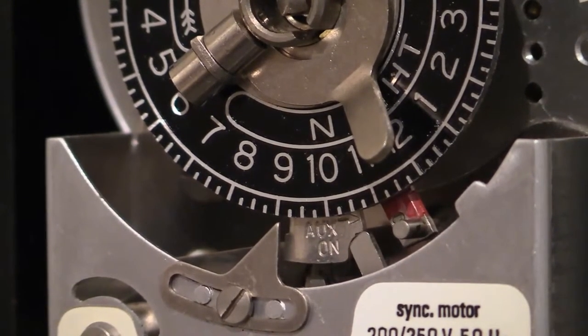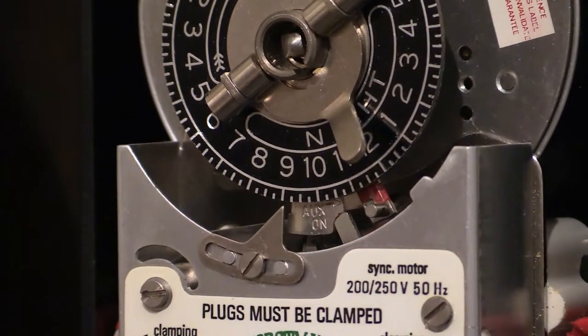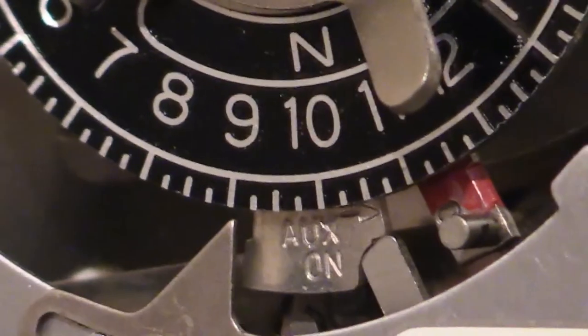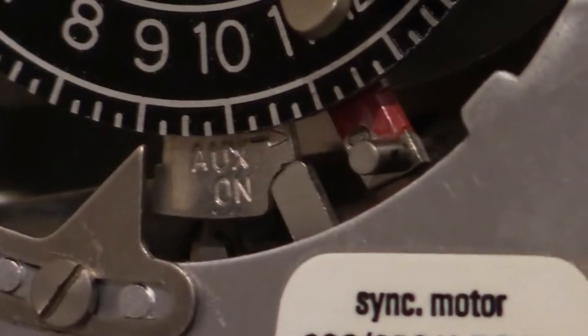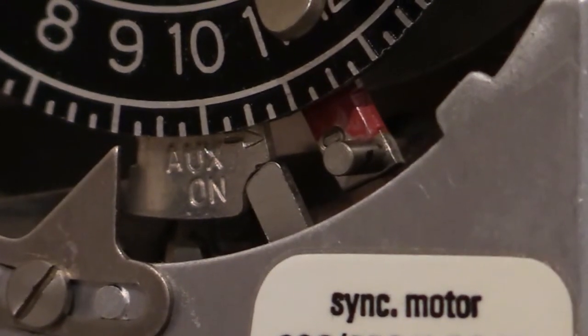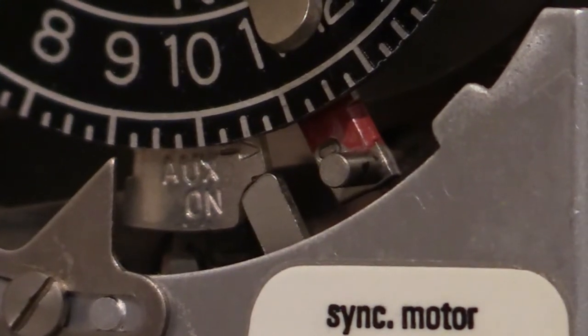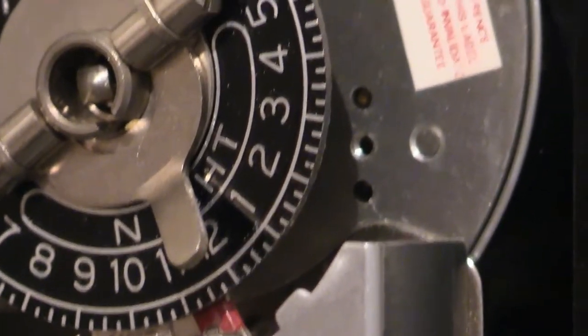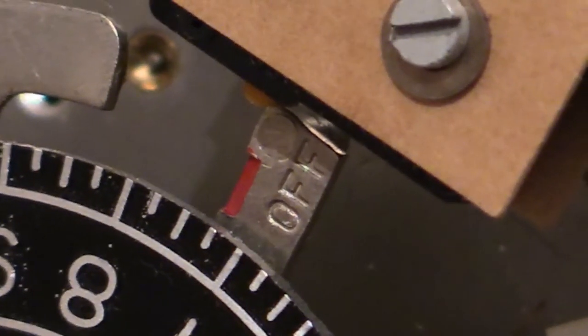I don't think I've ever changed the times on this one, and so as such the on operation on this is around about half past eleven at night. You can see the on tog there with that little red marker on it - I think that turns on around about half past eleven at night. The off tog is up the top there, and it turns off around about quarter past seven or half past seven in the morning. I think that's aiming for quarter past seven.